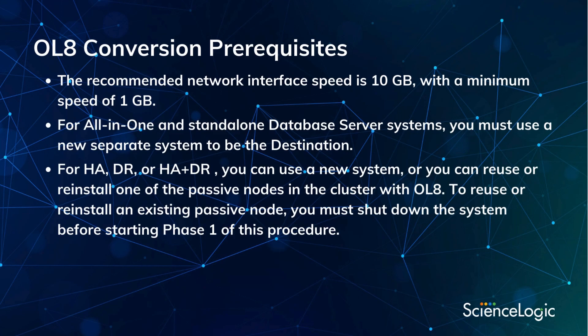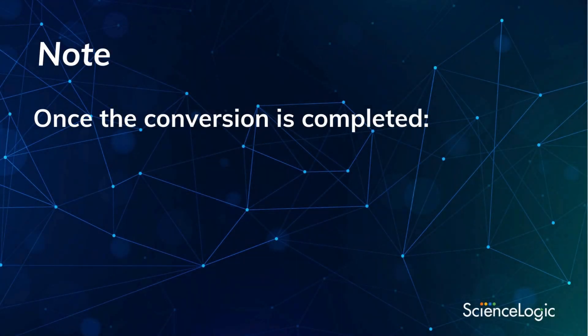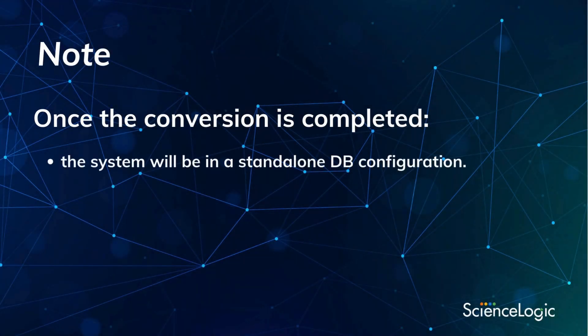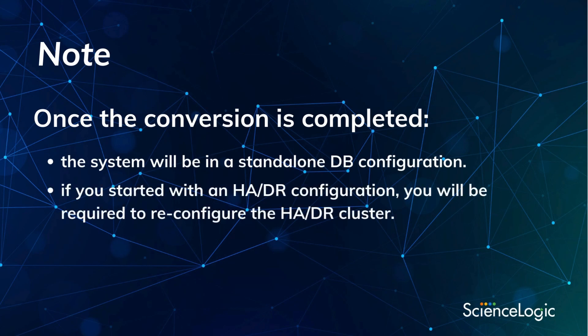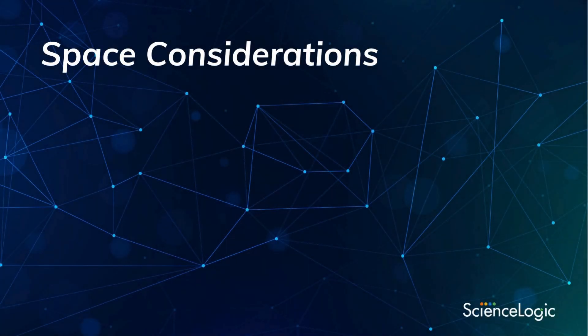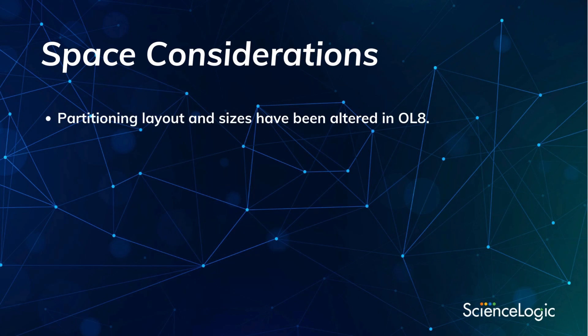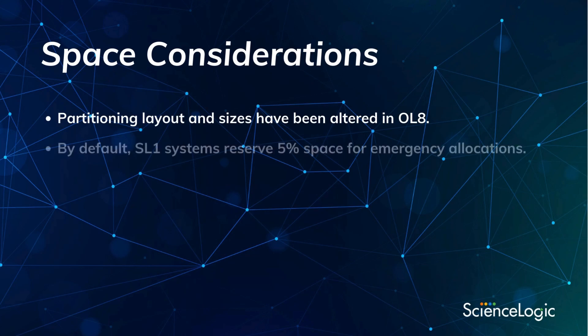To reuse or reinstall an existing passive node, you must shut down the system before starting phase one of the procedure. Once the conversion is completed, the system will be in a stand-alone DB configuration. If you started with an HA/DR configuration, you will be required to reconfigure the HA/DR cluster. Additionally, space considerations: when reinstalling an existing system with Oracle Linux 8 as the migration destination, keep in mind that partitioning layout and sizes have been altered in OL8.